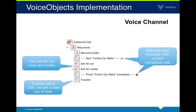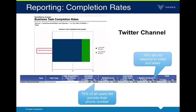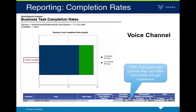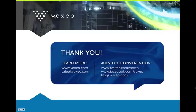With Voice Objects, you get reporting out of the box. The flows give us reports on completion rates, both on the Twitter channel and on the IVR channel. For the Twitter channel — where we were collecting the phone number — we can see how many people actually leave their phone number. We see a report showing that 78% of all people who responded to the bot actually gave their phone number, while 16% did not even respond to the initial tweet. Similarly on the voice channel, you can see how many people provided their car make and model and got transferred to the agent. All this comes out of the box with Voice Objects. If you're interested to learn more, get in touch with us over Twitter — our username is Voxeo. Thank you. Goodbye.